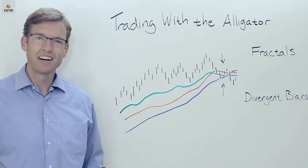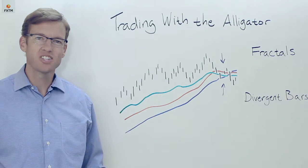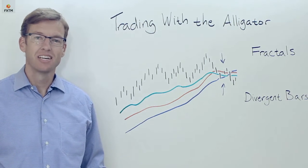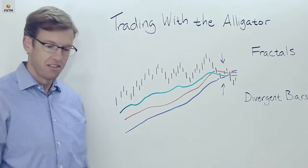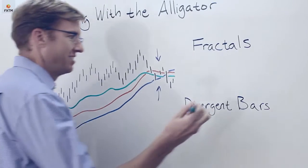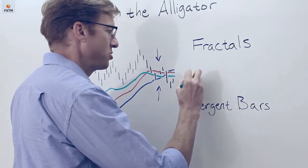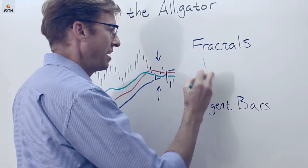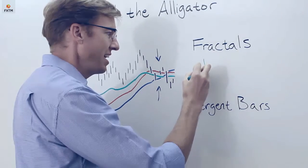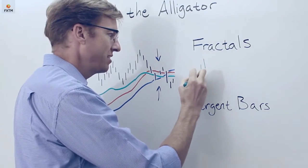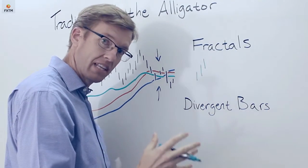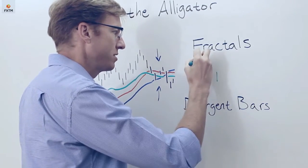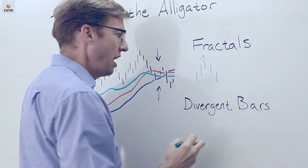There are a couple of additional concepts we need to understand before we dig into the trading signals associated with the alligator. The first of these is a fractal. Fractals come in basically two flavors. An up fractal is defined as a bar that has a higher high than the two bars that came before it and a higher high than the two bars that came after it.